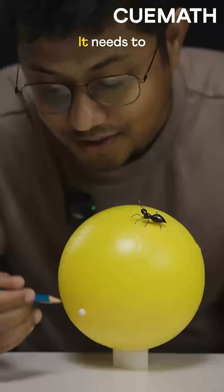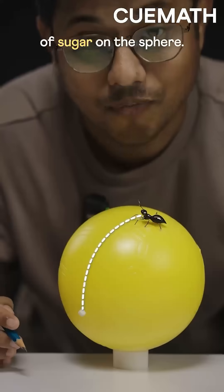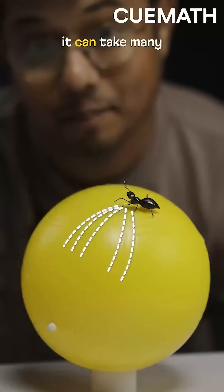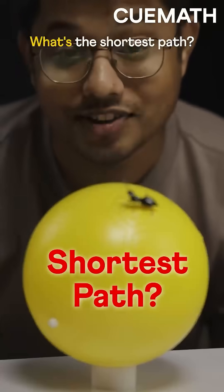An ant is on a sphere. It needs to crawl to a cube of sugar on the sphere. To do so, it can take many different paths. What's the shortest path?